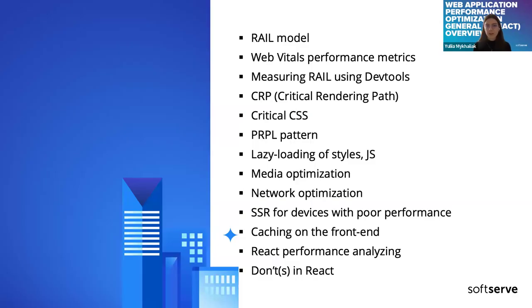Today's agenda includes: the RAIL model, web vitals performance metrics, measuring RAIL using dev tools, critical rendering path (CRP), critical CSS, PRPL pattern, lazy loading of styles and JS, media optimization, network optimization, SSR for devices with poor performance, caching on the front end, React performance analyzing, and don'ts in React.